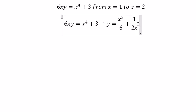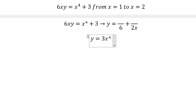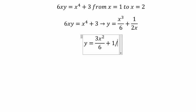Next we need to find the derivative of the function. So you get 3x squared over 6 and negative 1 over 2x squared. So we simplify 3 over 6.